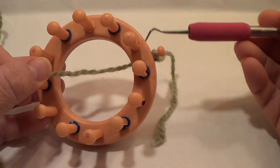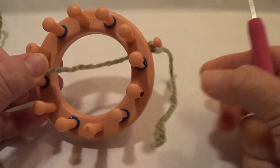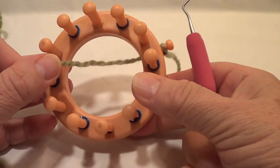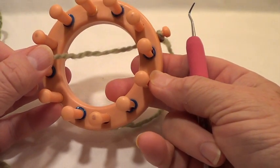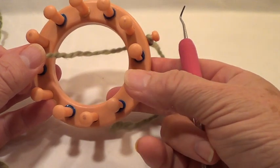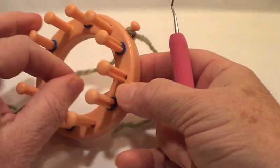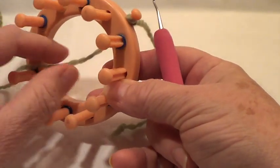Now ordinarily when we do a drawstring cast on, we start wrapping by bringing the yarn up through and between pegs 12 and 1. I'm modifying this a little bit because this variation will make a neater closure at the end of the project, and you'll see that when we finish.